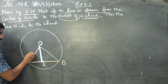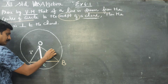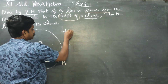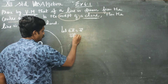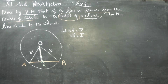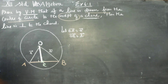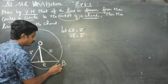Let OA vector be 'a' vector — the position vector of A. Let OB vector be 'b' vector — the position vector of B. Draw a circle with chord AB, take midpoint C, and join OA, OC, and OB.